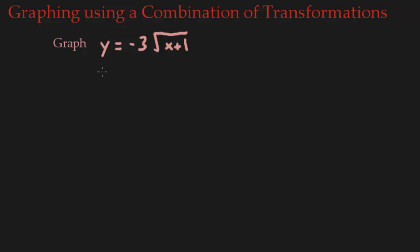Looking at this graph, we have our first step which is to identify the basic function. Looking at what we have, I see this is going to be a reflection, we have a shift here, but I do see this square root. And so my basic function is going to be the square root of x.